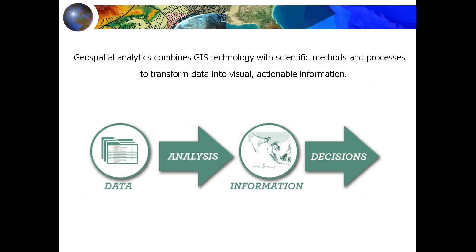Geospatial analysis combines GIS technology with scientific methods and purpose to transfer data into visual, actionable information. We start with data — depending on which kind of data we use, such as satellite data, sensor data, cell phone data, or GPS — we choose the kind of analysis accordingly. For example, for heat mapping we can use kriging or buffering. Depending on what method you use, you can extract information and make informed decisions.